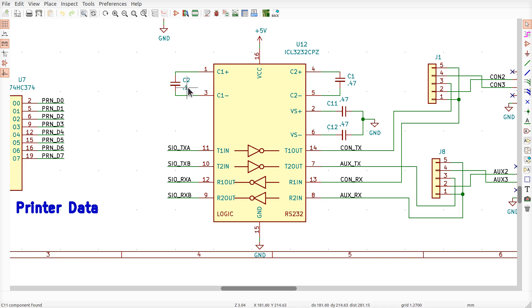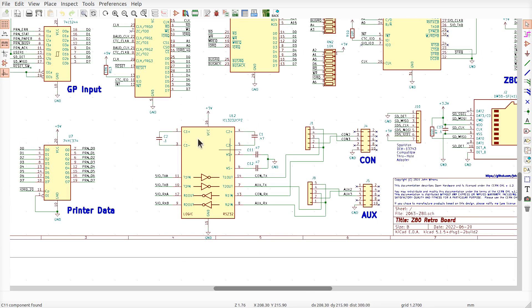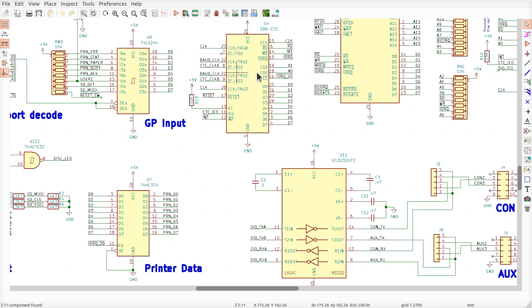I put 0.1 microfarad capacitors here, here, here, and here. And someone pointed out, you don't want to do that. These should be 0.47. Now I've updated the schematic, I've updated the BOM, and I pushed it out to GitHub. So this has already been disclosed.